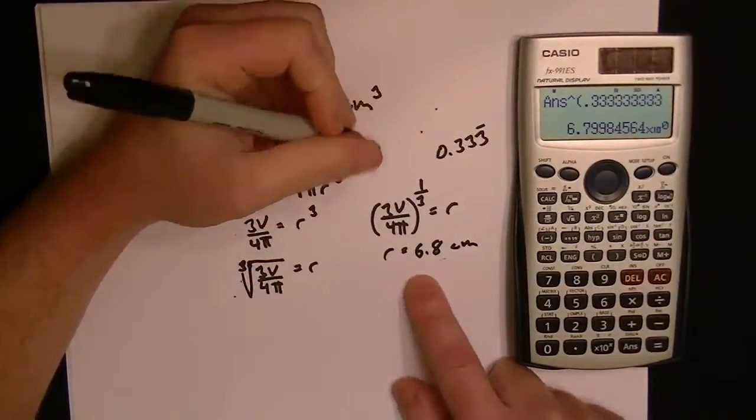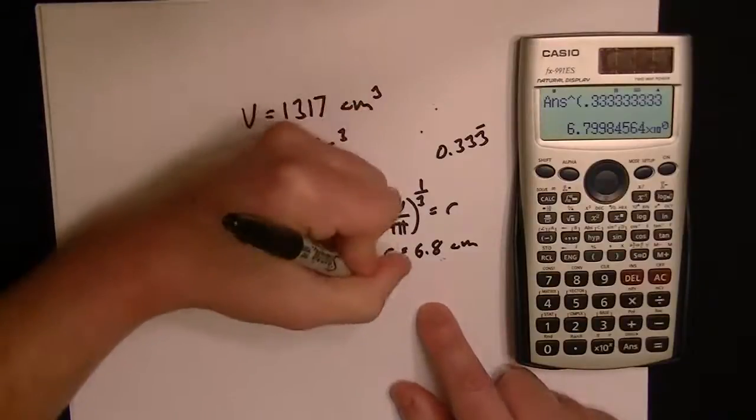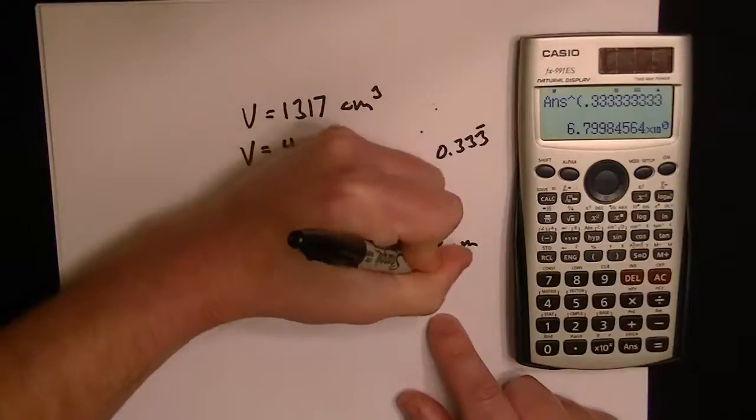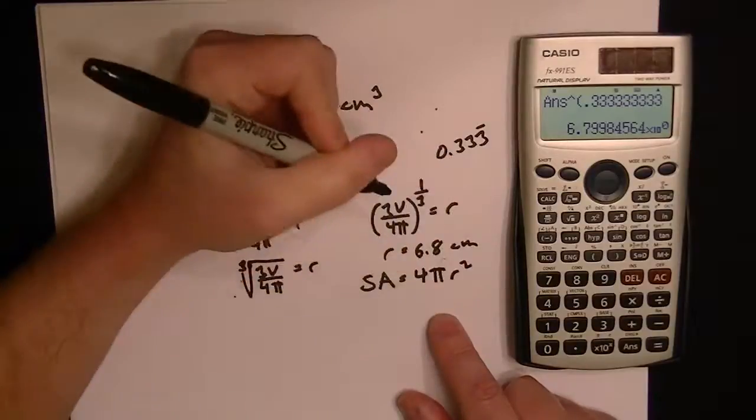Now, the second part, the question asks what's the surface area. Now that we have the r, we can find out the surface area for the sphere. That formula is 4 pi r squared.